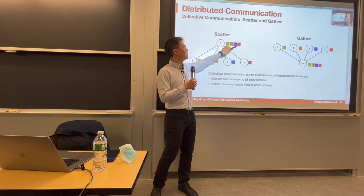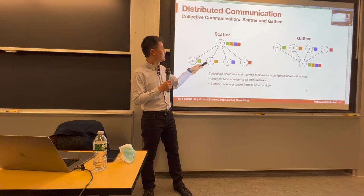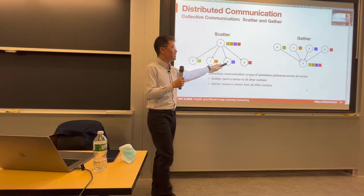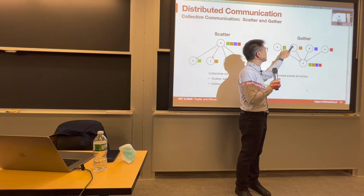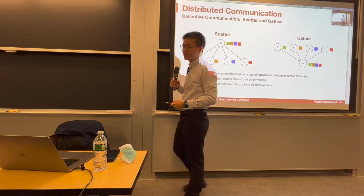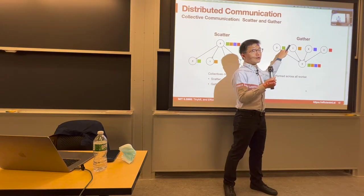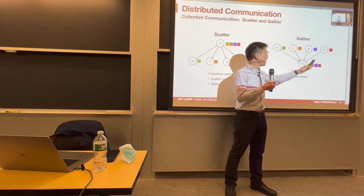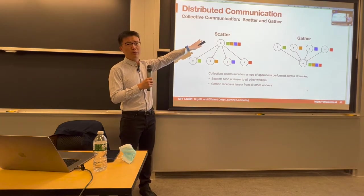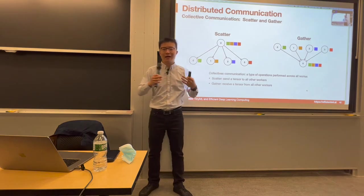We also have collective communication primitives: scatter and gather. Scatter distributes different elements to different workers — for example, distributing one apple each to four kids. Gather collects elements from different nodes into a new tensor. Reduce is similar to gather but also applies an operation — summing or finding the max — combining collected elements into a single reduced value.